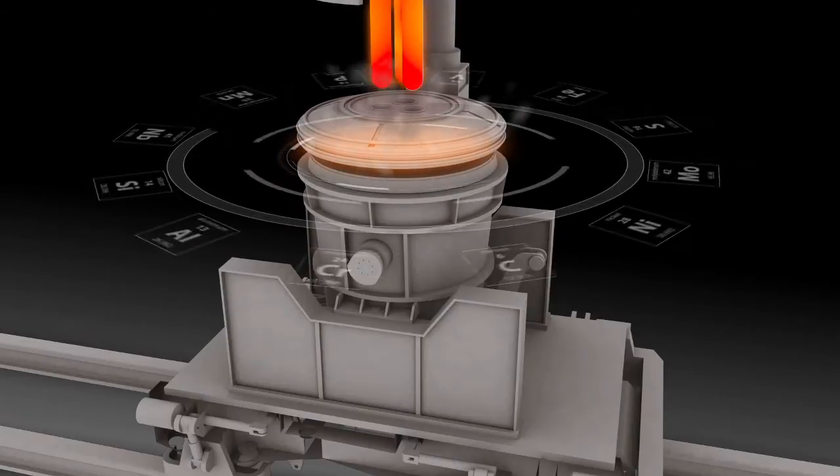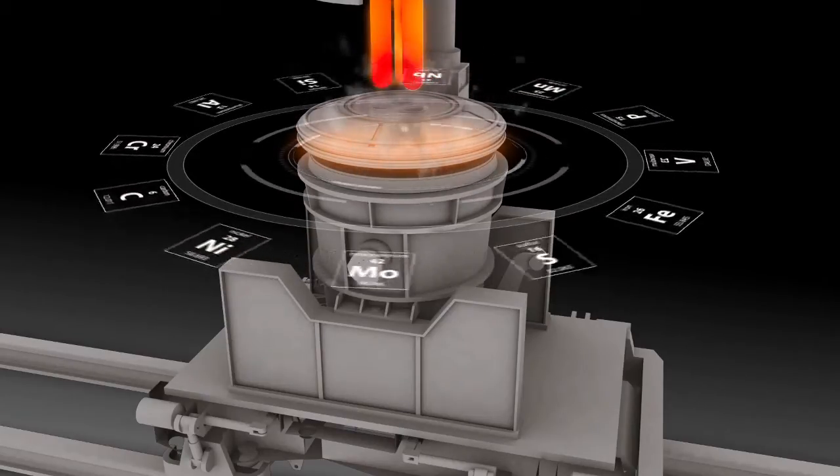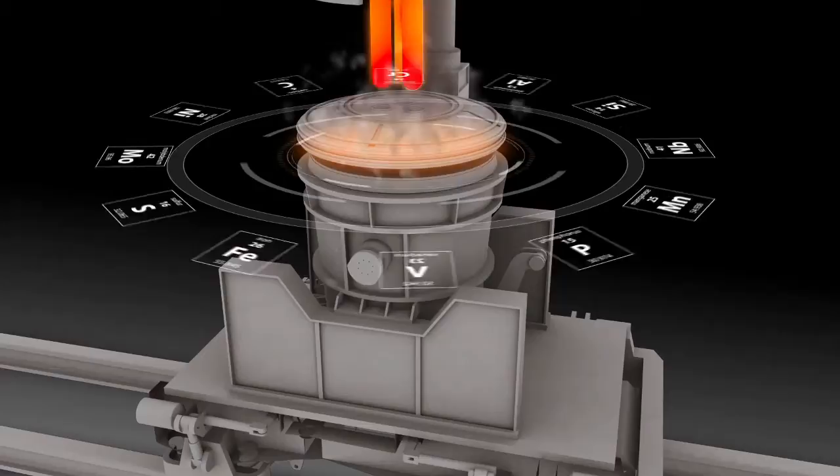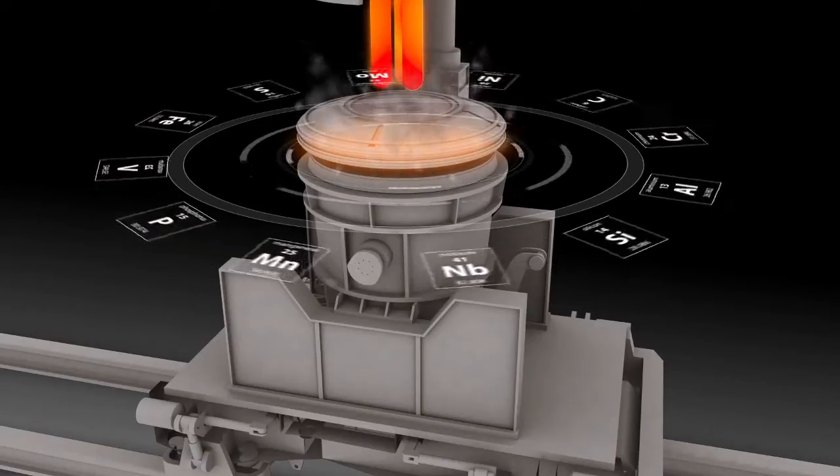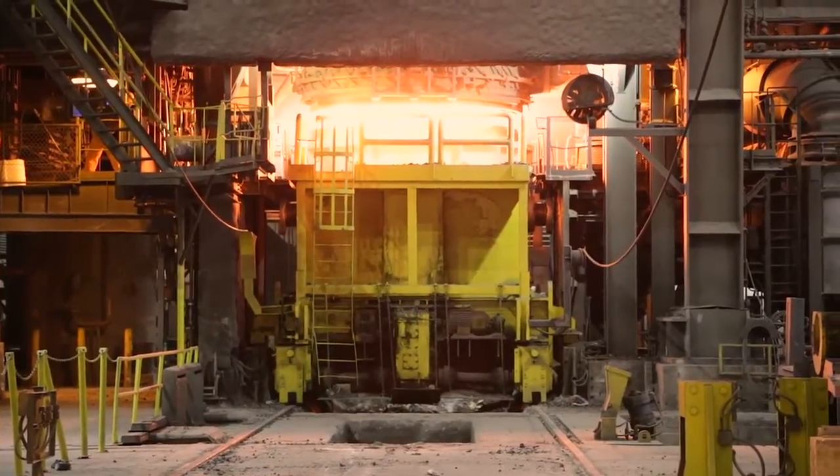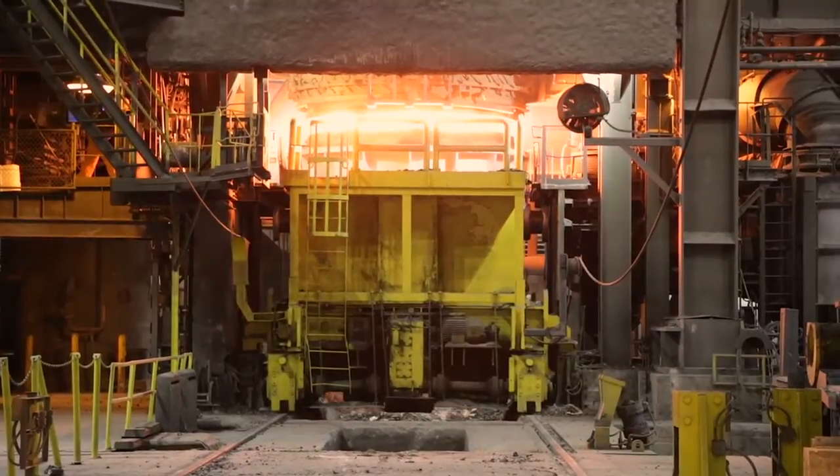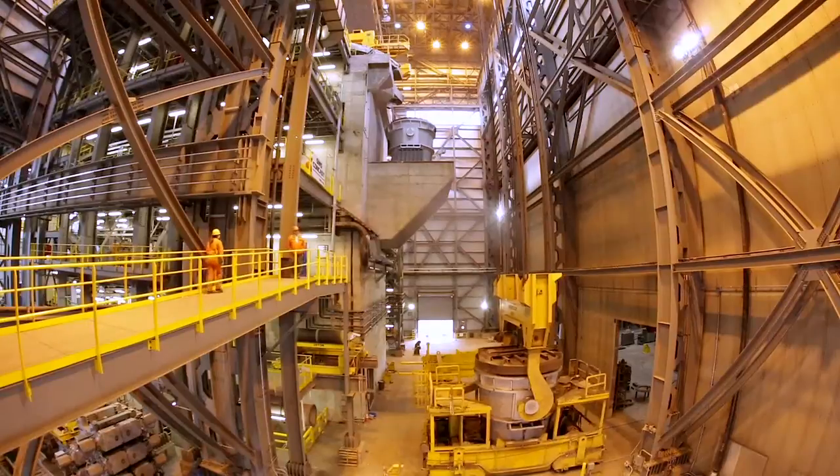A ladle departs the vacuum arc degasser after undergoing a rigorous refining process to meet our customers' exact chemistry specifications. The ladle then travels via transfer car from the ladle area to our new caster building. Once it reaches the caster, a 300-ton crane picks up the ladle.